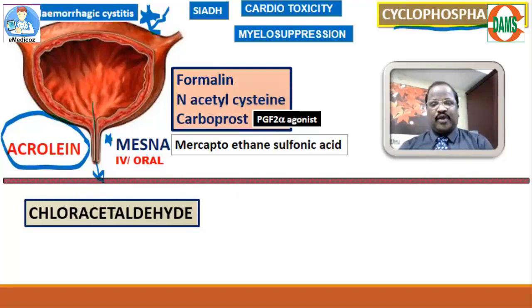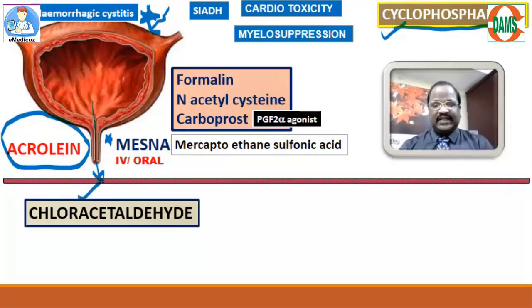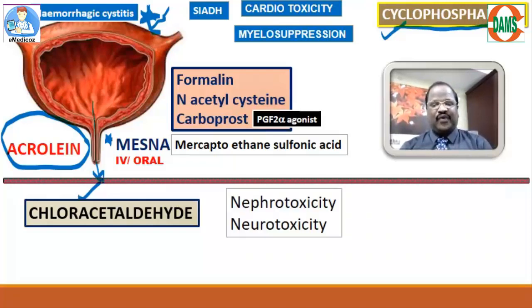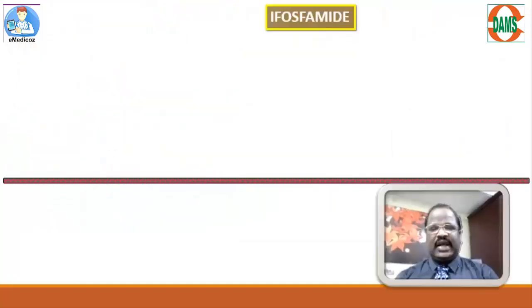One more important point: cyclophosphamide produces the metabolite chloroacetaldehyde, which causes nephrotoxicity and neurotoxicity. That covers the important metabolites, therapeutic uses, and adverse effects of cyclophosphamide.